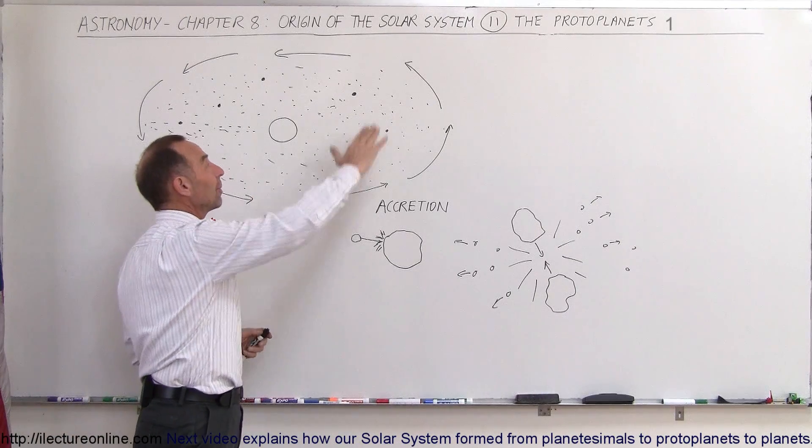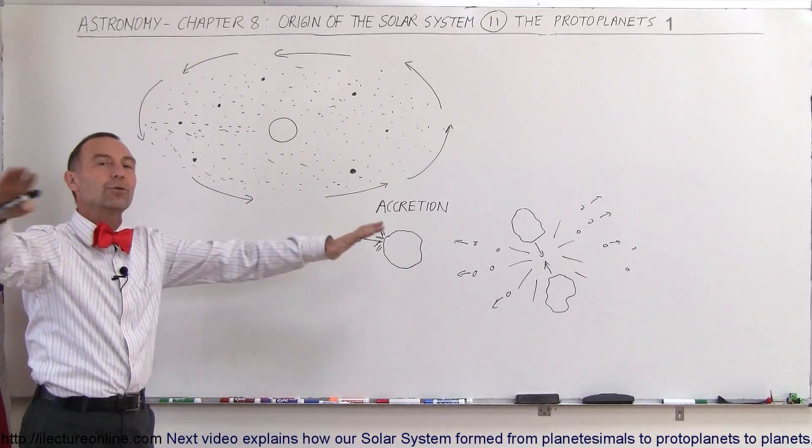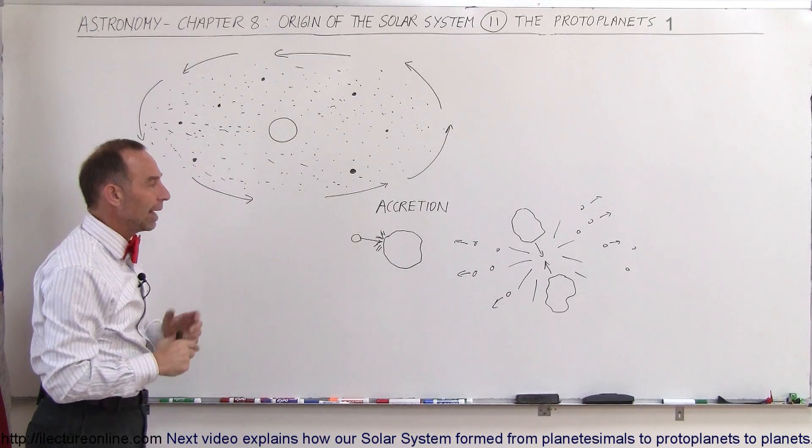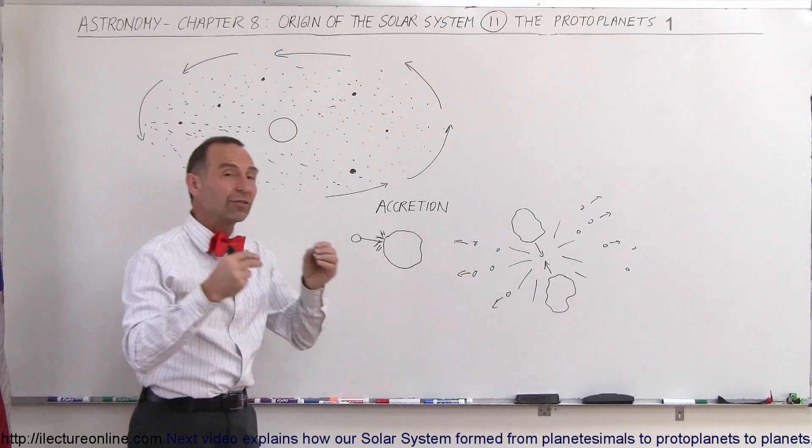And of course, there were thousands upon thousands of them, just like the asteroid belt today, but over the entire region of the solar system. And so for hundreds of thousands, maybe millions of years, there were all kinds of collisions.